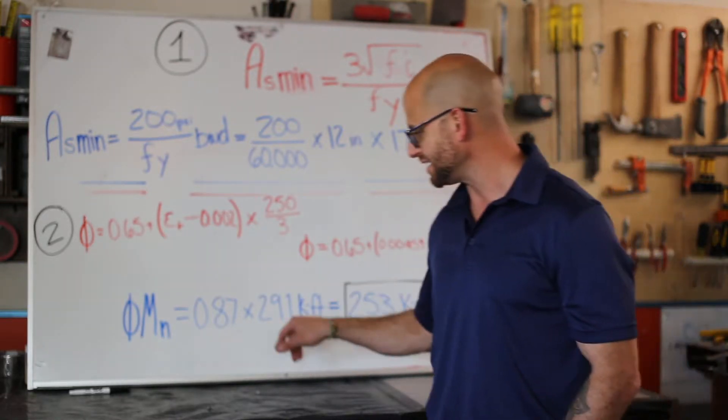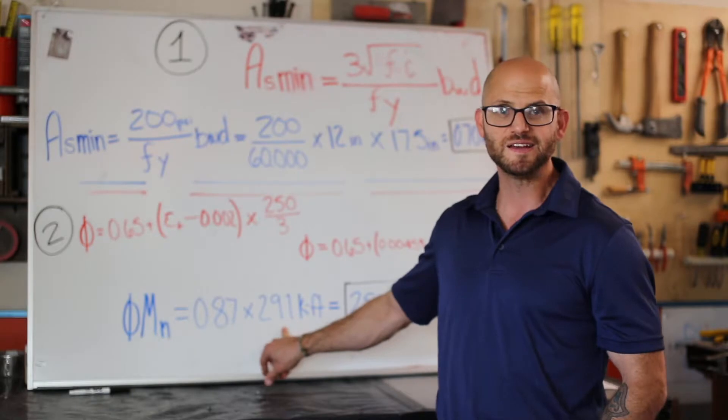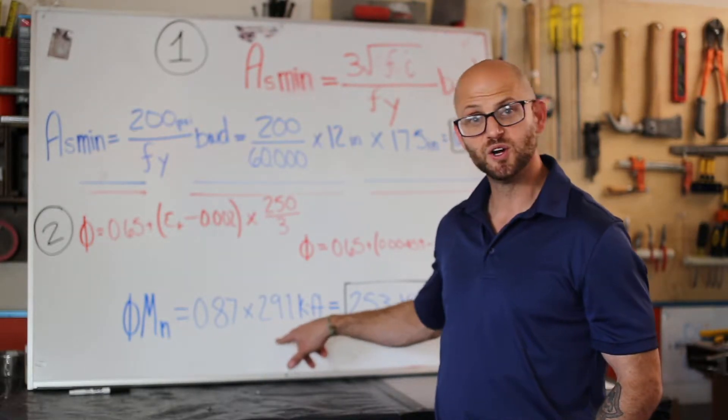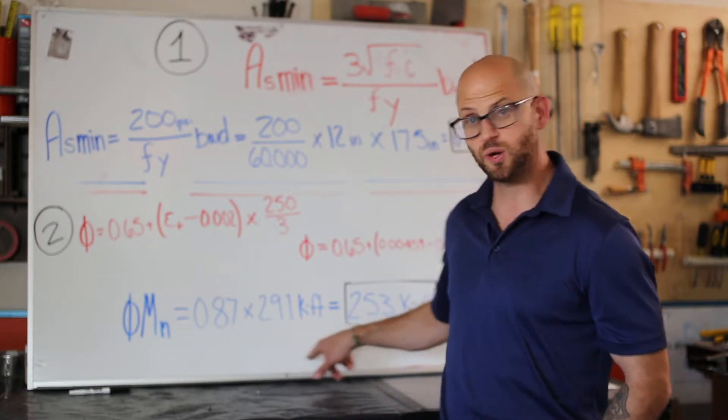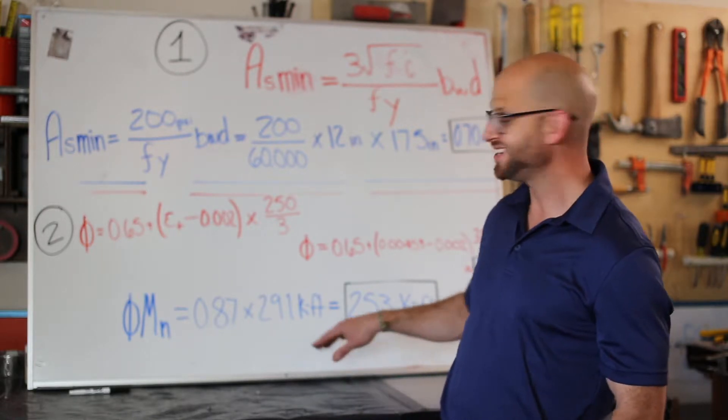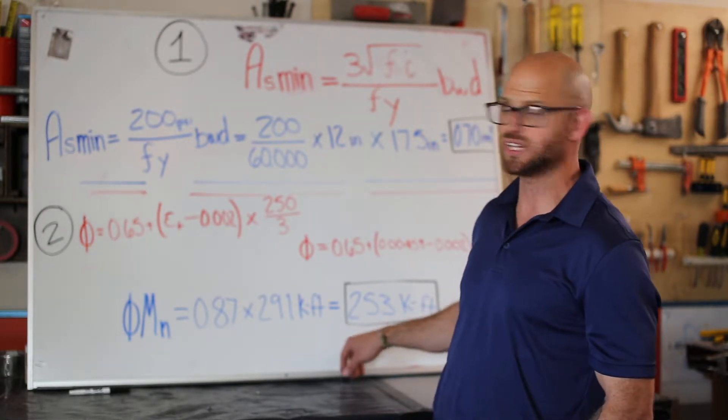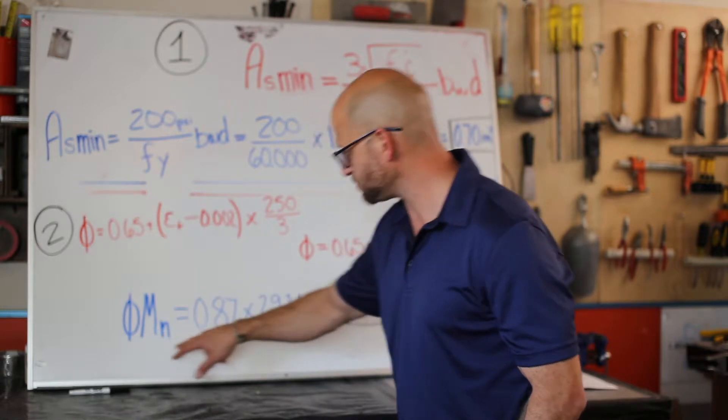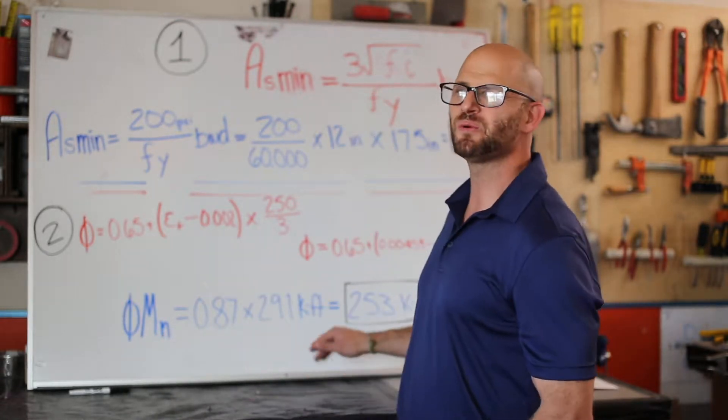We haven't talked about that 291 yet, so we're going to go back and show you how we found it. This is actually our final answer here. Funny enough, they didn't ask this in the question - they asked for the nominal moment and the strength reduction factor - but we like you guys.